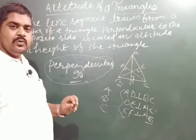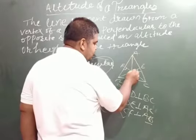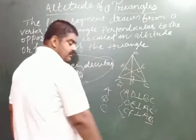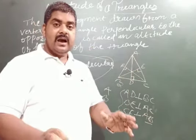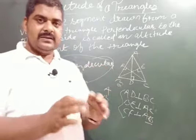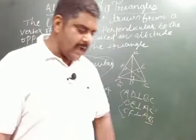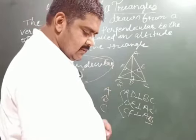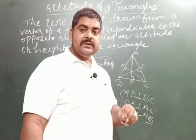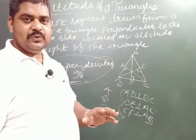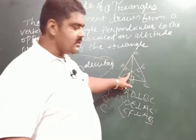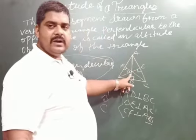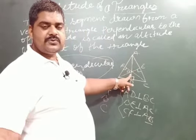You will also notice that these three altitudes meet at one point. When the three altitudes of a triangle meet at a point, that point is known as the orthocenter. If you name it O, then O is the orthocenter of this triangle.